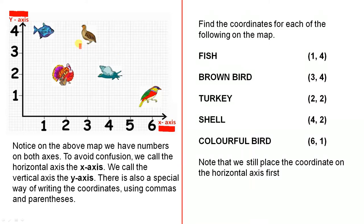The brown bird. There's the brown bird there. Go to the beginning. Three, four. (3,4). Turkey. There's the turkey there. Go to the beginning. Two, two. (2,2).